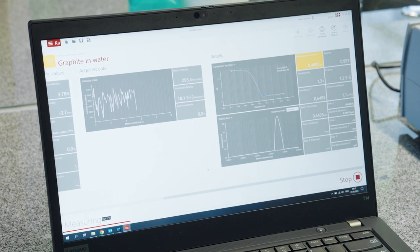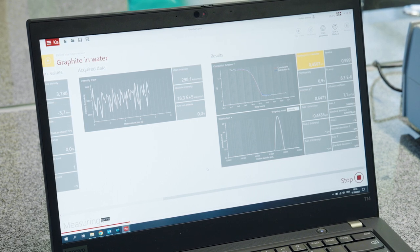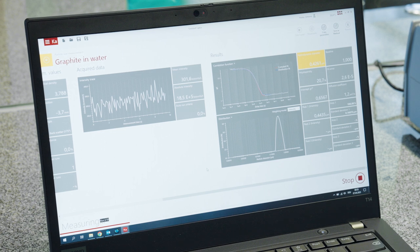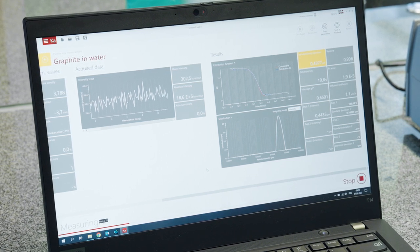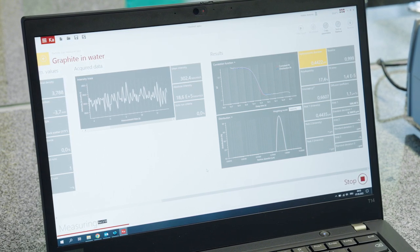For optimum results, you would want to see a monomodal type distribution of particle size. This will have a positive influence on the different steps of the battery manufacturing process.